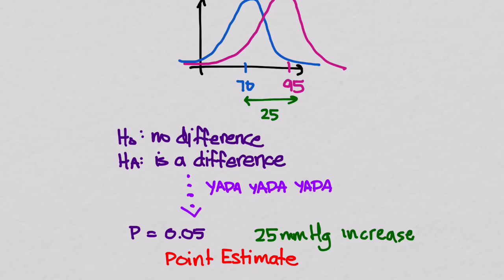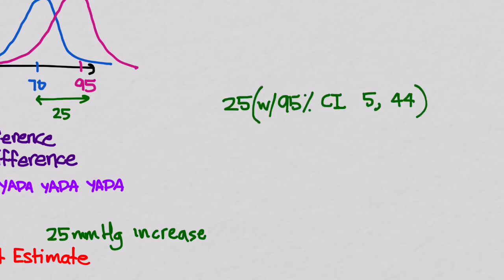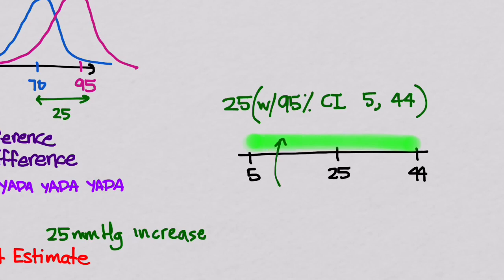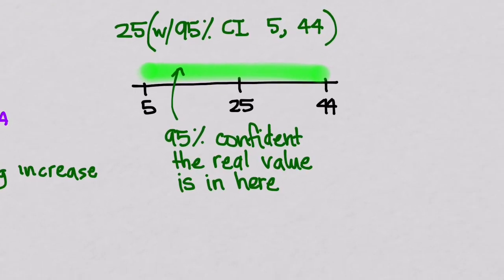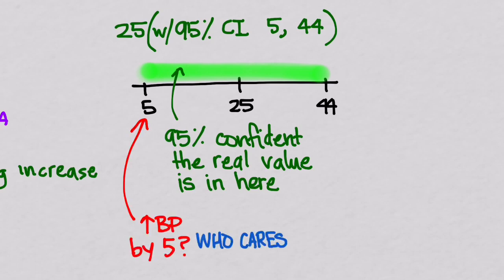But we can do better by using a confidence interval. With a confidence interval, we would report that the value is 25 with a 95% confidence interval between 5 and 44. This gives us a lot more information. What it says is that we are 95% sure that the real value is between 5 and 44. The real value could be 5 — which is statistically significant, but vasopressor B only increased blood pressure by 5, so who cares? That is not clinically significant.